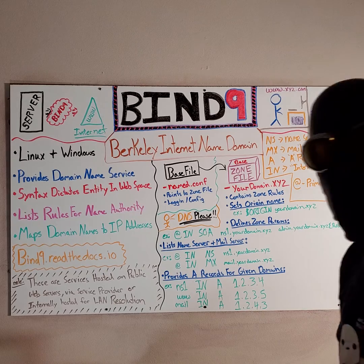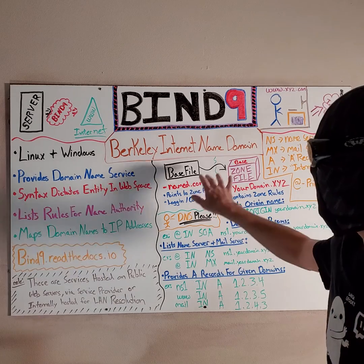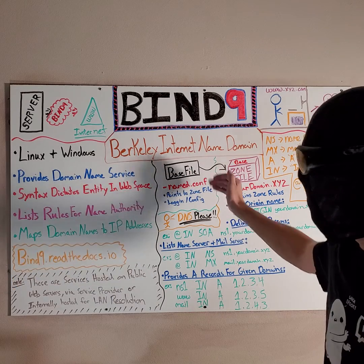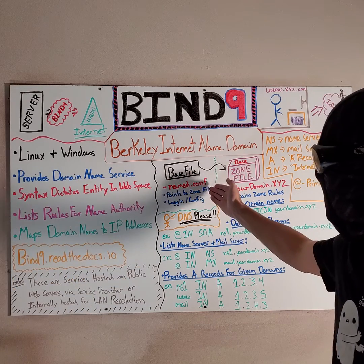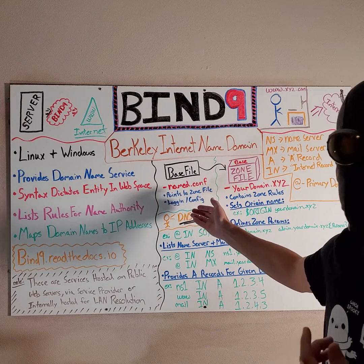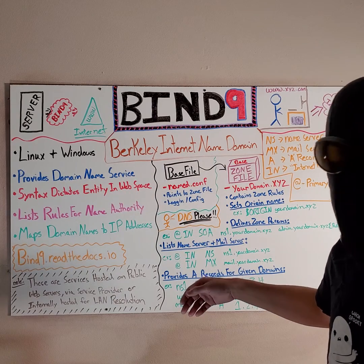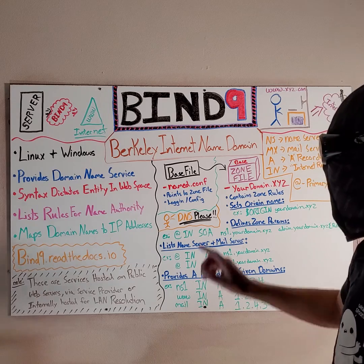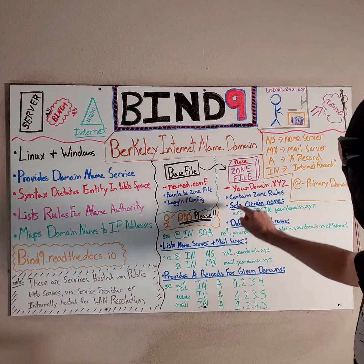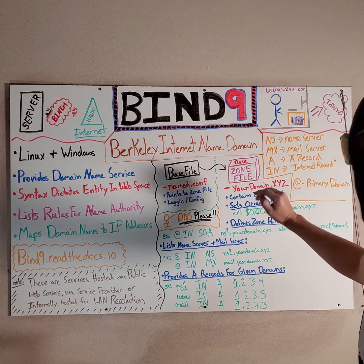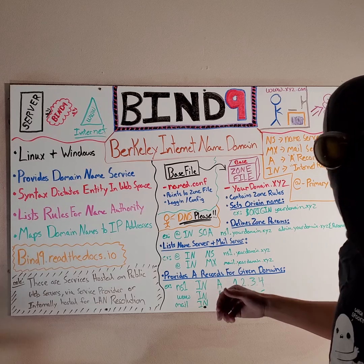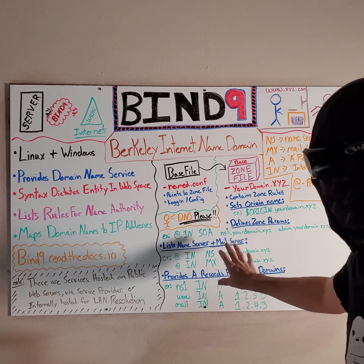Now let's go into how it's configured. Basically there's a couple of files here. We've got our base file, named.conf, and that just basically points to the second file. The zone file allows you to do some configuration and set logging and things of that nature. In your base zone file, you actually have your domain set. It contains the rules for the zone and a few other parameters that you can set.